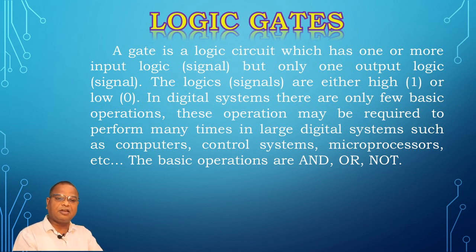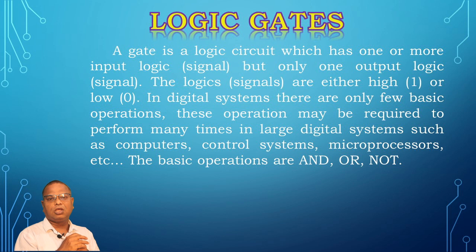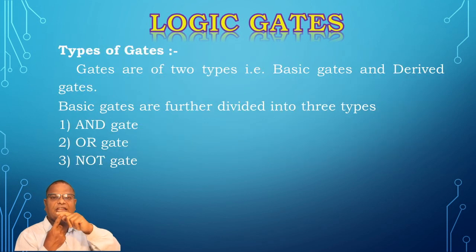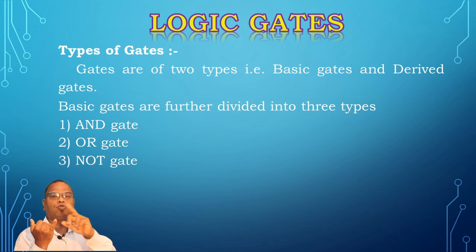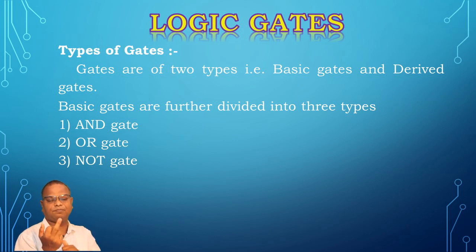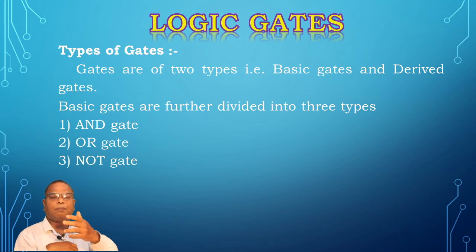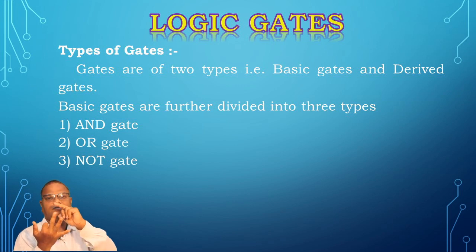These three operations are fundamental to digital devices. There are basically two types of gates: basic gates and derived gates. Basic gates perform the basic operations. The AND gate performs the AND operation, the OR gate performs the OR operation (addition), and the NOT gate performs complement or inversion of the input signal. These are the three basic gates: AND gate, OR gate, and NOT gate.